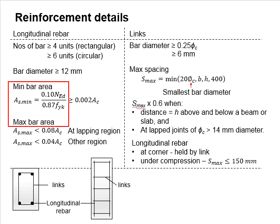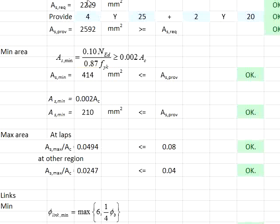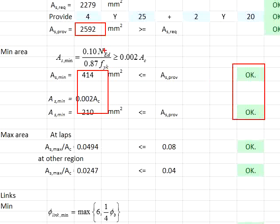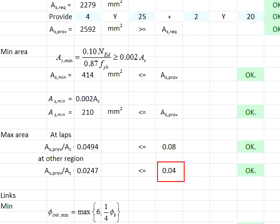Next, you need to check for the minimum and maximum rebar area as given in the formula. Substitute Ned and fyk into the formula — you get 414 mm². Use this formula and substitute the width and height of the column size; you will get 2910 mm². The provided amount of reinforcement bar is greater than As,min, therefore it is considered satisfactory. Next, use the As,provided divided by the column size — you will get about 2-point-something percent of the reinforcement bar, which is less than the 4% maximum.